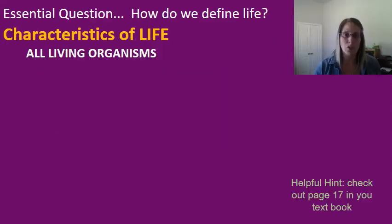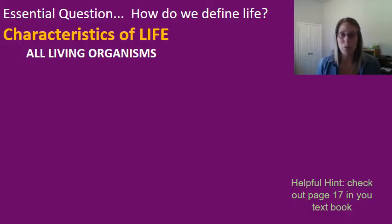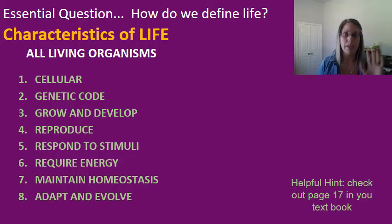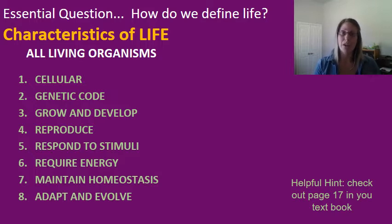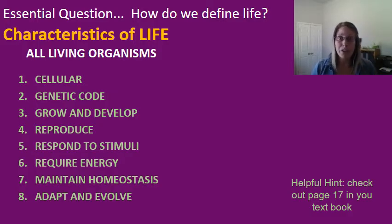Today we'll stick to our essential question: how do we define life? How do I tell the difference between something biotic and abiotic? It's actually complicated, but scientists have observed that there are eight characteristics that all living organisms follow, no matter what type — single-celled, multi-celled, bacteria, or plants. They are: cellular, having a genetic code, grow and develop, reproduce, respond to stimuli, require energy, maintain homeostasis, and adapt and evolve.